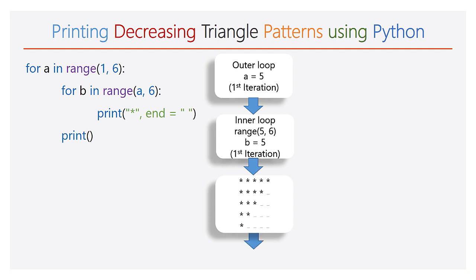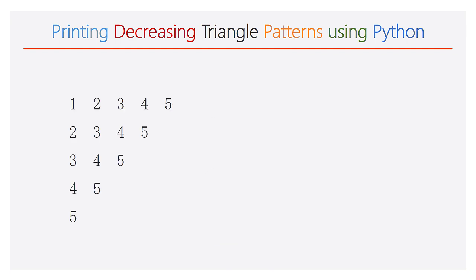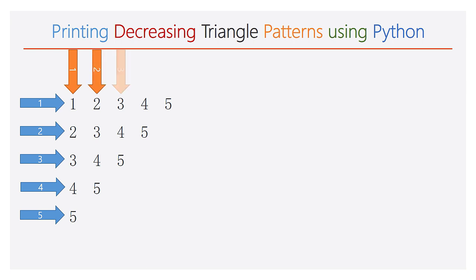Then the empty print function is executed and the cursor will take the new line. This is how we can print a decreasing triangle pattern that contains only stars. Now let us consider one more decreasing triangle that contains numbers. Here we have 5 rows and 5 columns. If you observe very carefully, the first line has the numbers 1 to 5. Hence during the first iteration of the outer for loop, the inner for loop should be iterated 5 times.